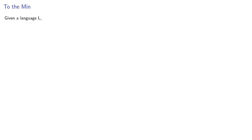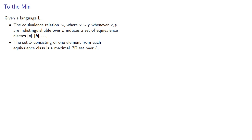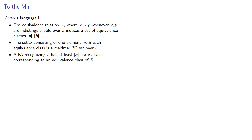Given a language L, the equivalence relation squiggle, where x squiggle y whenever x and y are indistinguishable over L, induces a set of equivalence classes. The set S, consisting of one element from each equivalence class, is a maximal pairwise distinguishable set over our language, and a finite automaton recognizing L has at least that many states, each corresponding to an equivalence class of S.